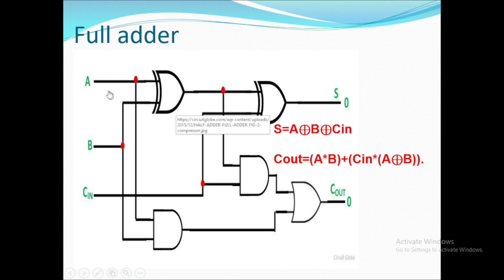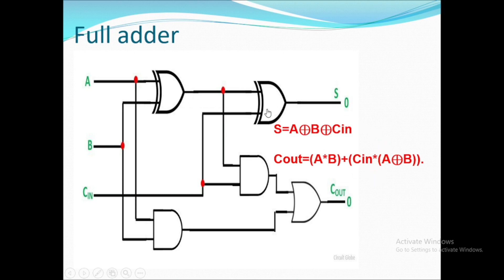For the full adder, the circuit has three inputs: A, B, and C_in. We use two XOR gates, two AND gates, and one OR gate.